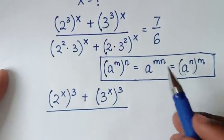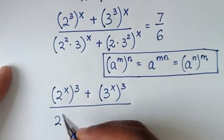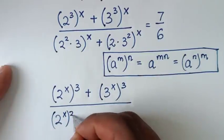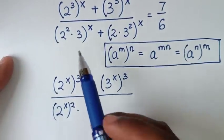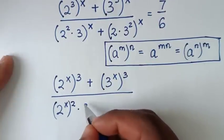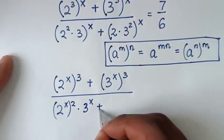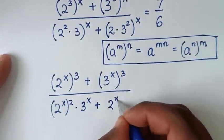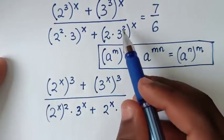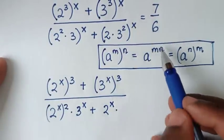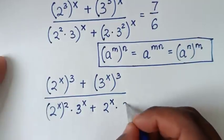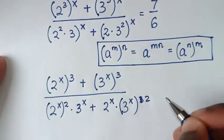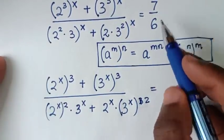Continuing to apply the exponent rule to the remaining terms, 18^x = (2 × 3²)^x becomes 2^x × (3^x)². So our equation now has the numerator (2^x)³ + (3^x)³ over the denominator 2^(2x) × 3^x + 2^x × (3^x)², which equals 7/6.